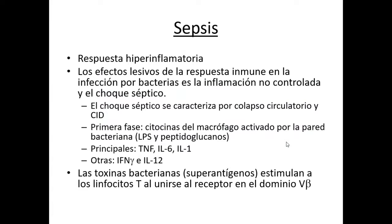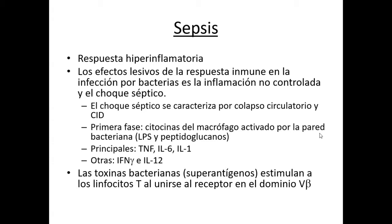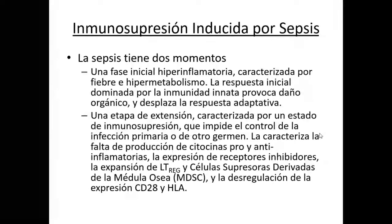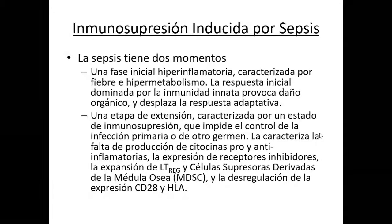En sepsis se pueden considerar dos momentos. Uno, que es el de la respuesta inflamatoria hiperinflamatoria, que se caracteriza por tres componentes: instalación de la coagulación intravascular diseminada, hipoglicemia debida al daño tisular, y choque cardiogénico. Esto se debe a la presencia de niveles exagerados de interleucinas proinflamatorias en circulación. Puede suceder que la sepsis entre en otra etapa, llamada la etapa de inmunosupresión, que se caracteriza porque el paciente va a presentar un estado de inmunosupresión profunda debido principalmente a que las células inmunes comienzan a morir por apoptosis de forma masiva.